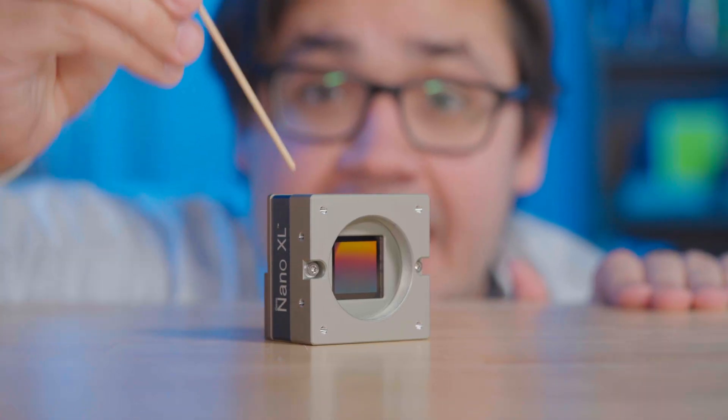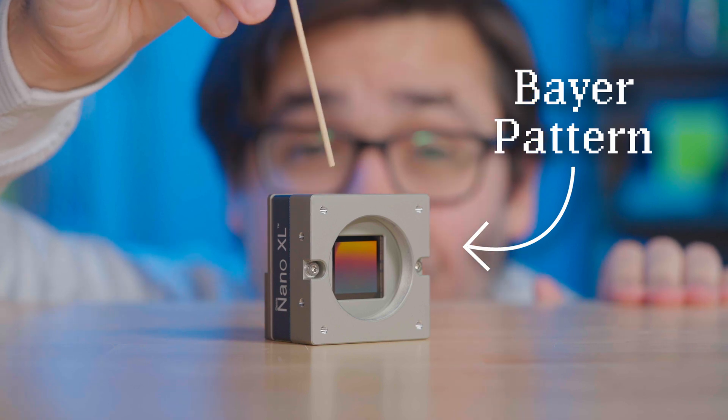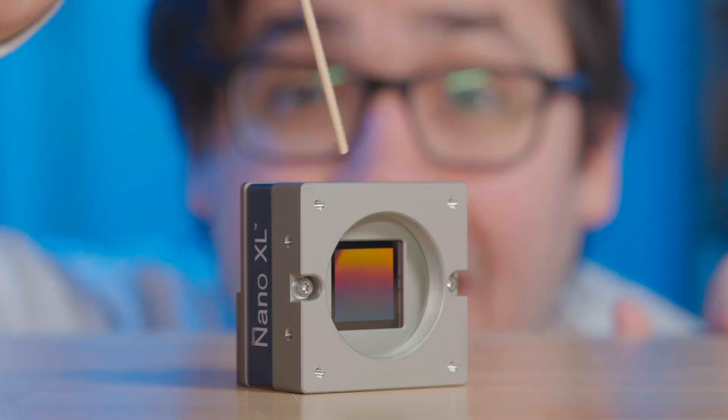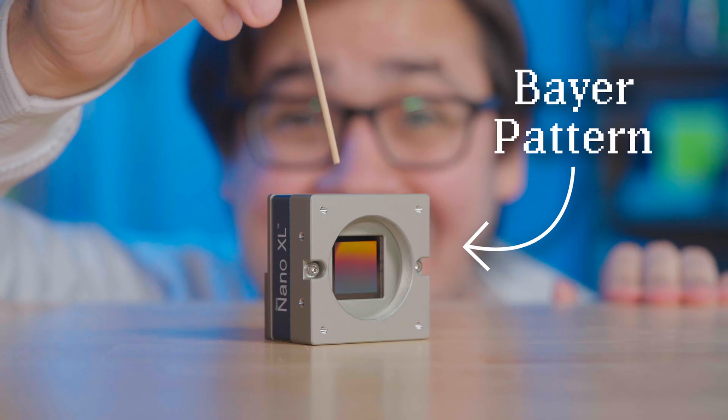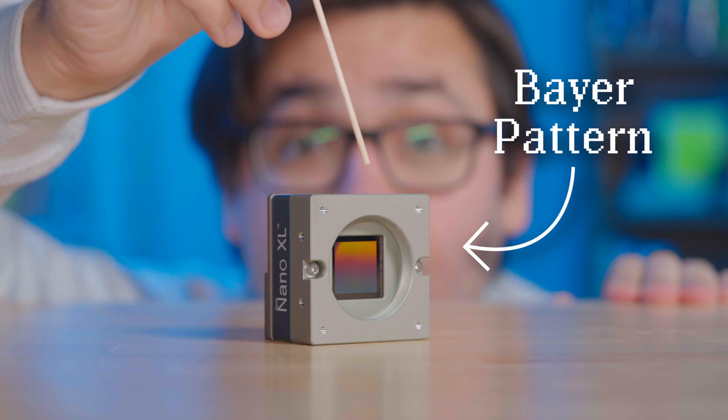While you can't see it here, on this sensor is our Bayer pattern. It's made up of thousands and thousands, thousands and thousands, thousands and thousands of tiny little coded pixels working together to create our final color image.